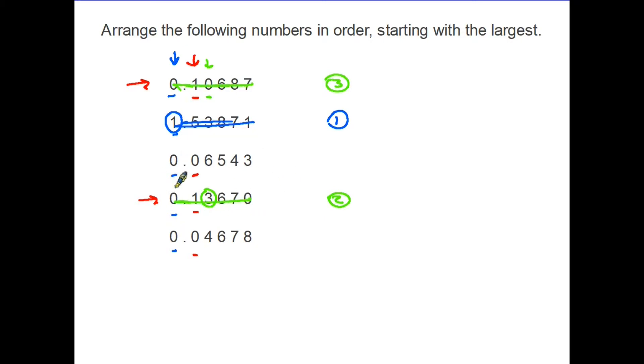We go back now. The remaining two, they were both zero in the first column, zero in the second column. Therefore we go to the third column. We have a six and we have a four. Therefore the six is larger than the four. That must be the fourth largest, and that is therefore the smallest number.